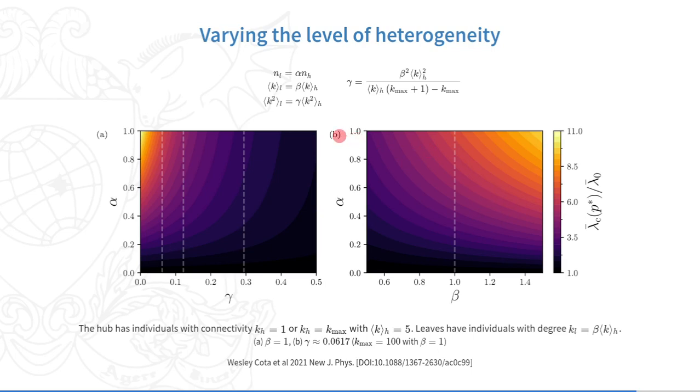The same happens in B, keeping gamma constant and increasing beta, the hub again becomes more heterogeneous. In both cases, reducing alpha reduces this detrimental effect, since the agents of the leaves are not able to substantially modify the connectivity distribution of the hub anymore.